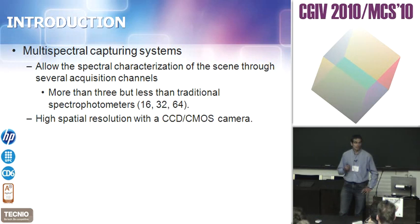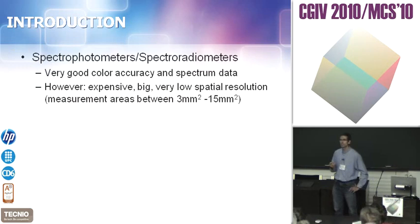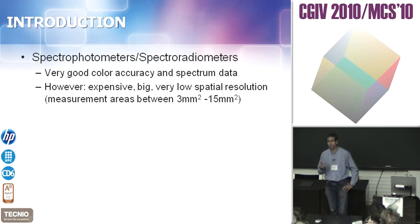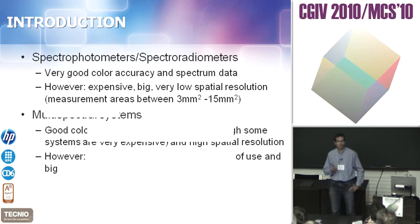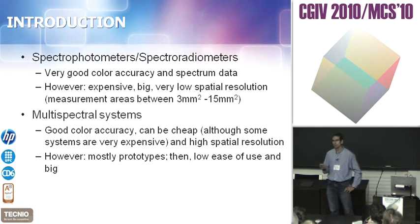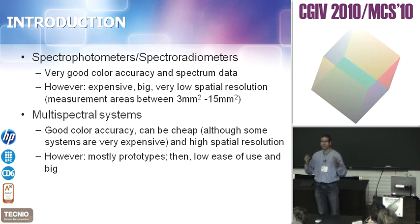Multispectral systems have the good advantage of very high spatial resolution using a CCD or CMOS camera. Spectrophotometers are distinguished by very good color accuracy and very good spectral resolution, but they only measure one point. In multispectral systems you can also get very good color accuracy, and you add the value of being able to capture a whole image with very high spatial resolution.